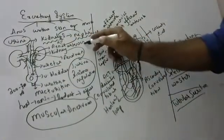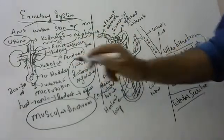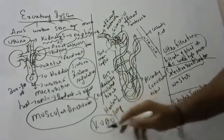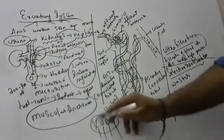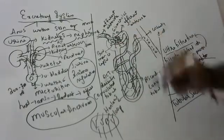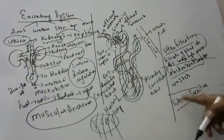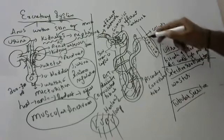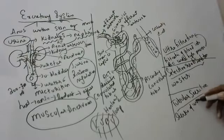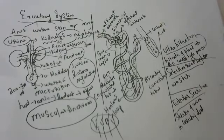What are the parts we have studied? Renal arteries, renal veins, kidney, ureter, bladder, urethra. Inside the nephron: glomerulus, Bowman's capsule, descending convoluted tubule, Henle's loop, and the collecting duct. What is tubular secretion? Secretion of urine into the collecting duct is called tubular secretion.